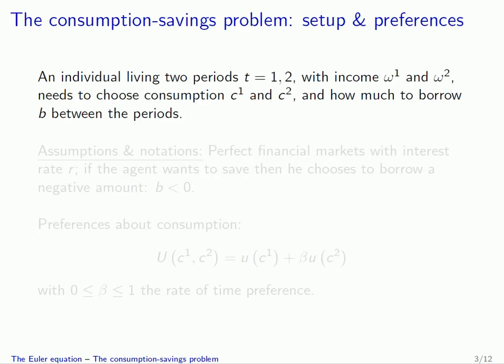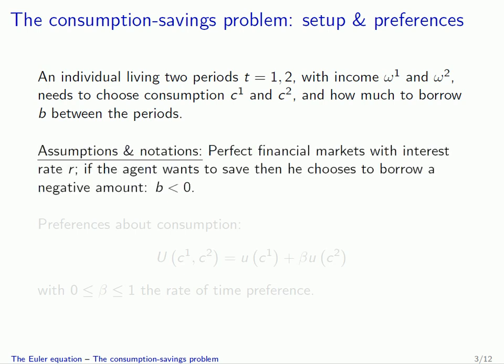So what's this consumption savings problem about? We have an individual that will live two different periods: period 1 and period 2. This individual has income omega 1 in period 1 and omega 2 in period 2, and he or she needs to choose consumption C1 and C2 in each period. Depending on the consumption choice, this individual will have to choose how much to borrow or save between the two periods. B is the amount borrowed. The individual has access to perfect financial markets charging an interest rate R. If the agent wants to save, he or she will choose to borrow a negative amount, so B can be strictly negative.